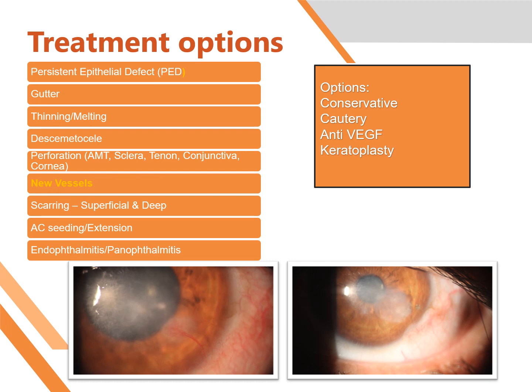Another complication is the development of new vessels. If the new vessels are small and peripheral, you can leave them and treat conservatively. Or you can do cautery to the main feeder vessel as shown here. You can also use anti-VEGF injections. If the new vessels are all around and obstructing vision, you can even do keratoplasty, though it will be a high-risk procedure.